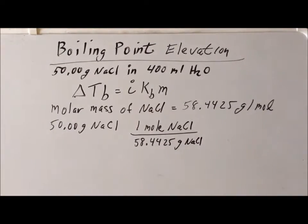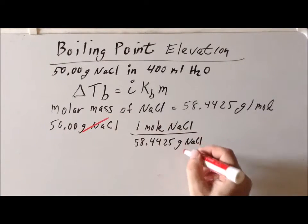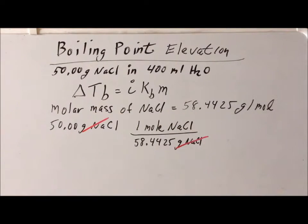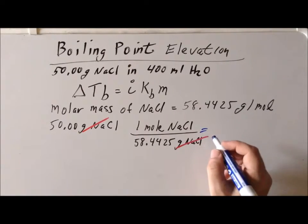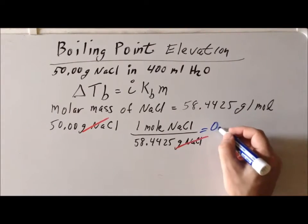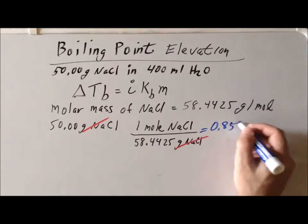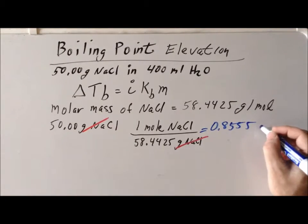By multiplying through, we notice that the units of grams of sodium chloride cancel and we'll get an answer in terms of moles of sodium chloride, which is exactly what we want. Once we form that calculation, we see that we have 0.8555 moles of sodium chloride.